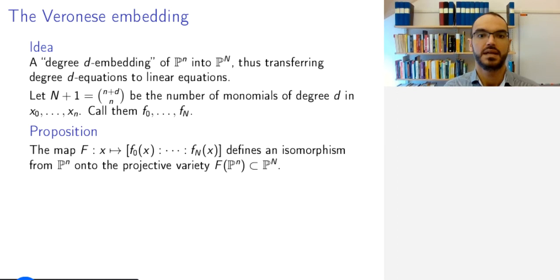Now we claim that the following map defines an isomorphism from P^n to its image. The map is simply given by mapping a point x to these monomials evaluated at the point x.